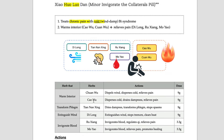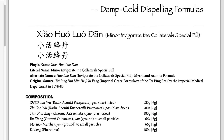The herbs inside include Chuan Wu and Zhao Wu — those are the family of Fu Zi, one of the strongest herbs that warms the interior. There is also Tian Nan Xing; Nan Xing is the herb that transforms phlegm, just like Ban Xia. Ban Xia and Nan Xing are commonly combined together in this formula. Nan Xing is a major herb. There's also Di Long, which extinguishes wind and stops tremor, treating pain by expelling wind. And two herbs — Ru Xiang and Mo Yao — both invigorate blood; these are commonly paired herbs.